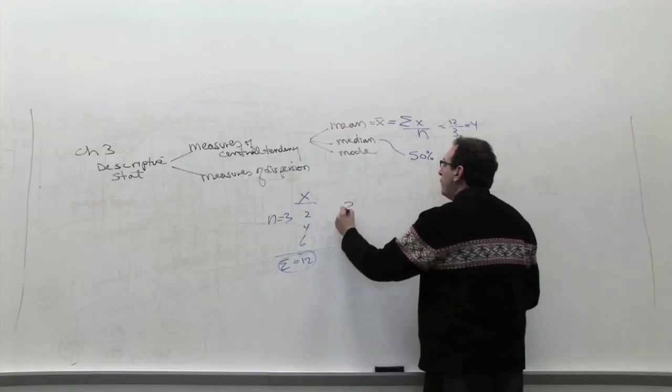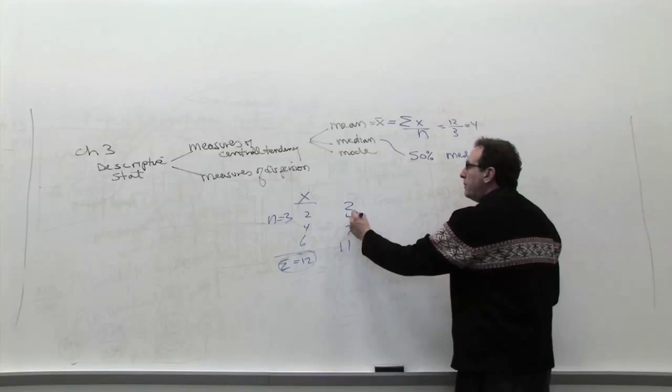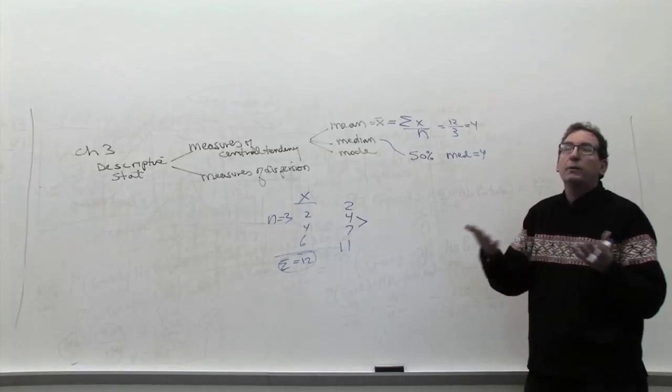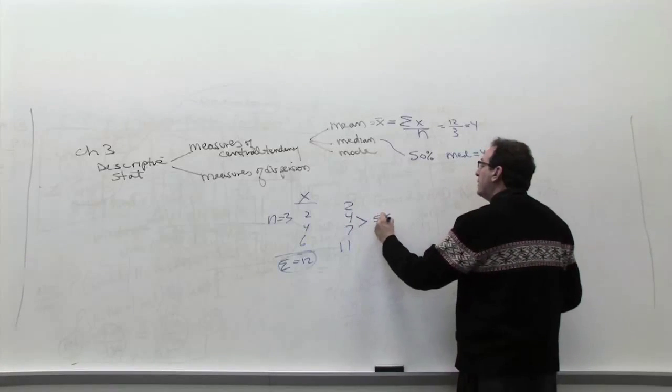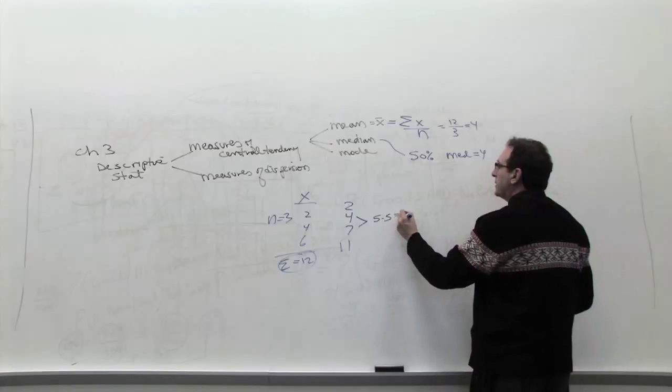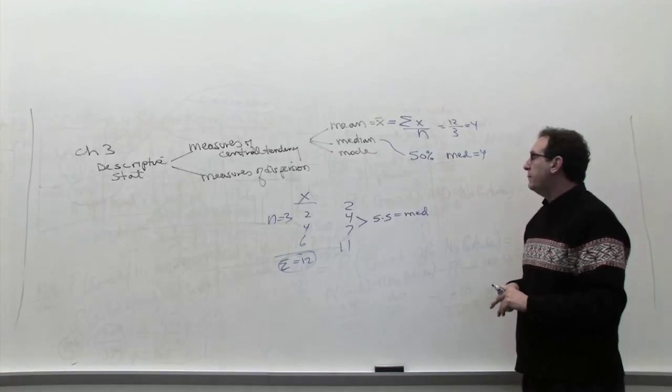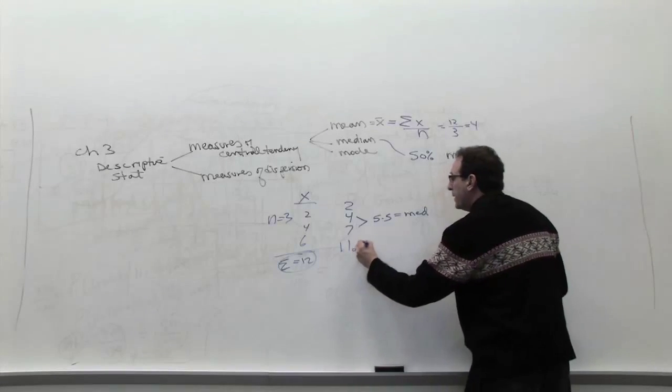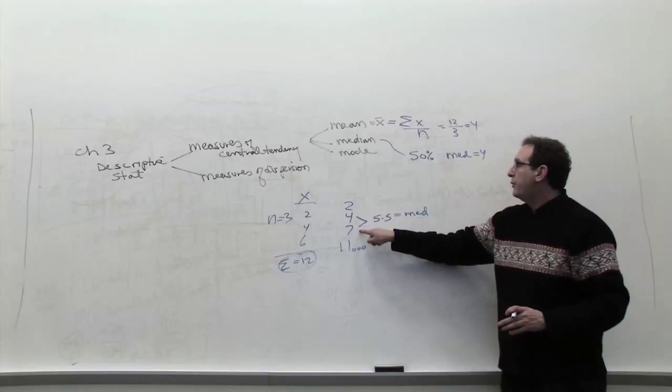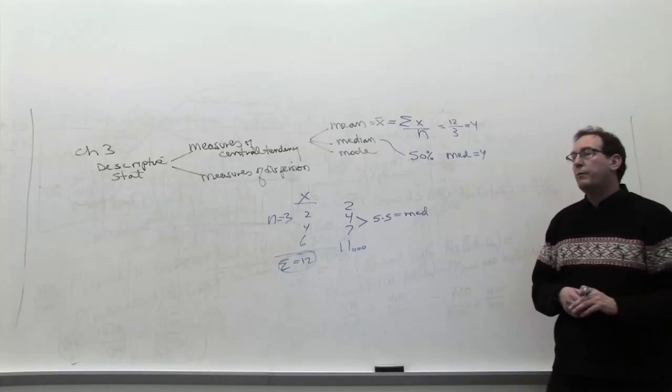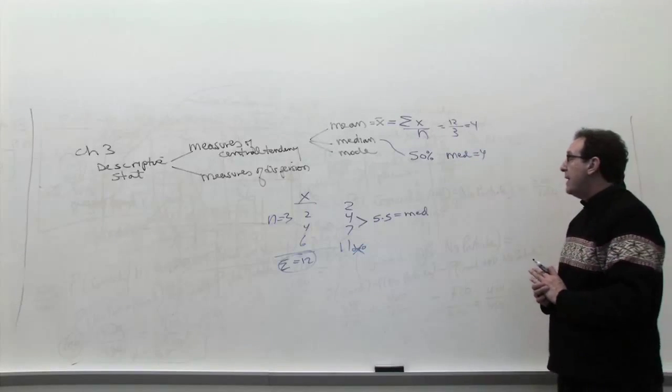If we have the example of 2, 4, and 6, the median would be 4, because there's one person below 4 and one person above 4, so 4 really breaks it up into 50-50. But if I change it to 2, 4, 7, and 11, what's the median now? Here there's no middle number, but there are two middle numbers. You take those two middle numbers and split the difference between them. 4 plus 7 is 11, 11 divided by 2 is 5.5. So 5.5 would be the median in this case.